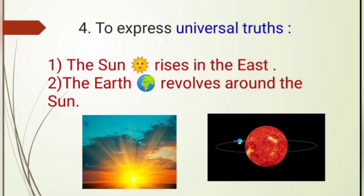Simple present tense or present indefinite tense is also used to express universal truths — that means facts that were true before, are true now, and will be true in the future. For example, 'the sun rises in the east' or 'the earth revolves around the sun.' These are facts that are always true. So simple present tense is used to express universal truths.